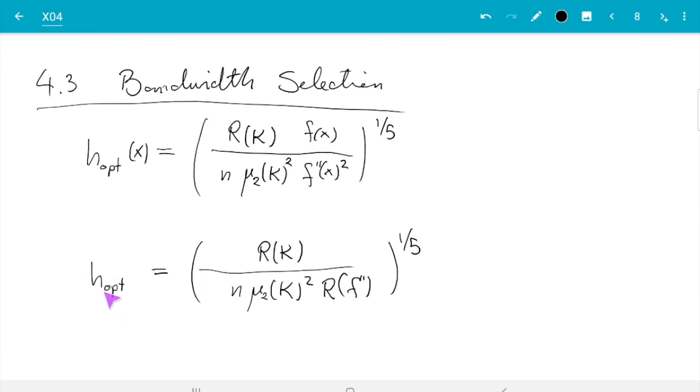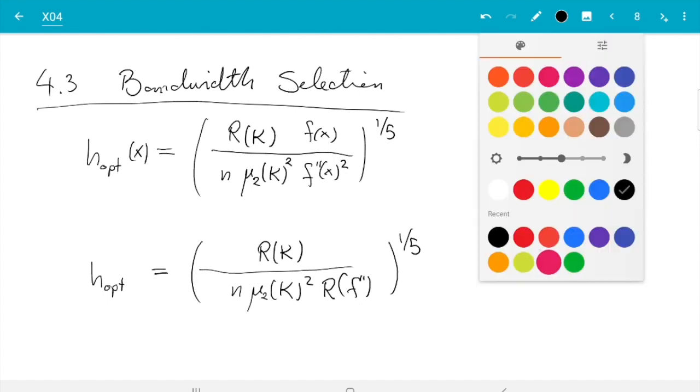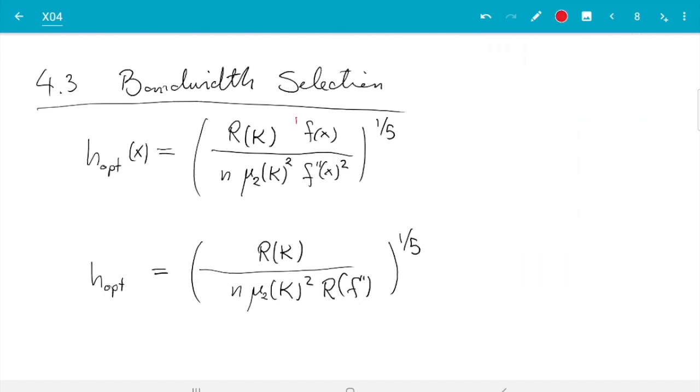And from section 4.1, where we learned about the integrated mean squared error, the optimal bandwidth for that is this, and that depends only on the roughness of f double prime. But in both cases, f makes a contribution and we don't know f. And it's kind of a circular problem: we are going to estimate f, so once we are done we maybe would have a chance to find these values, but we need to choose them before we start estimating h.